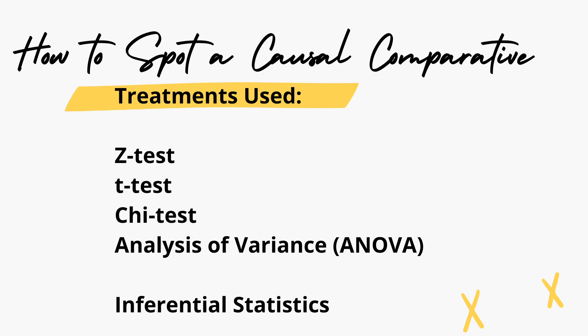As to the treatment, causal comparative studies also use inferential statistics. Commonly used are Z-test, T-test, Chi-test, and analysis of variance, or ANOVA.